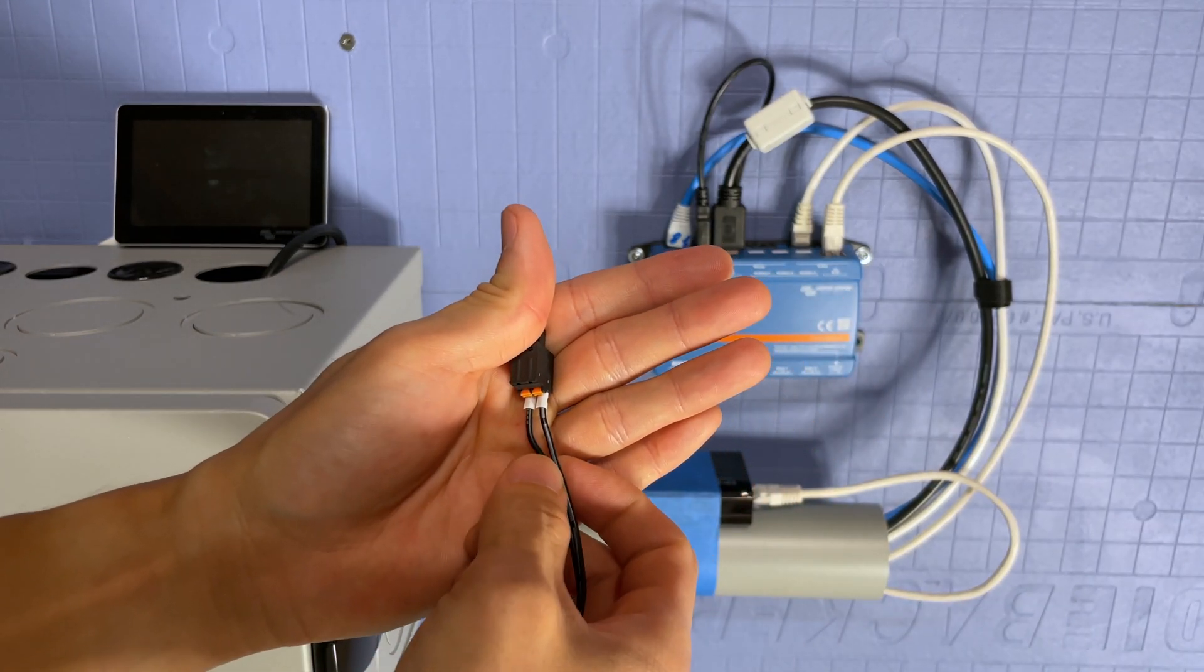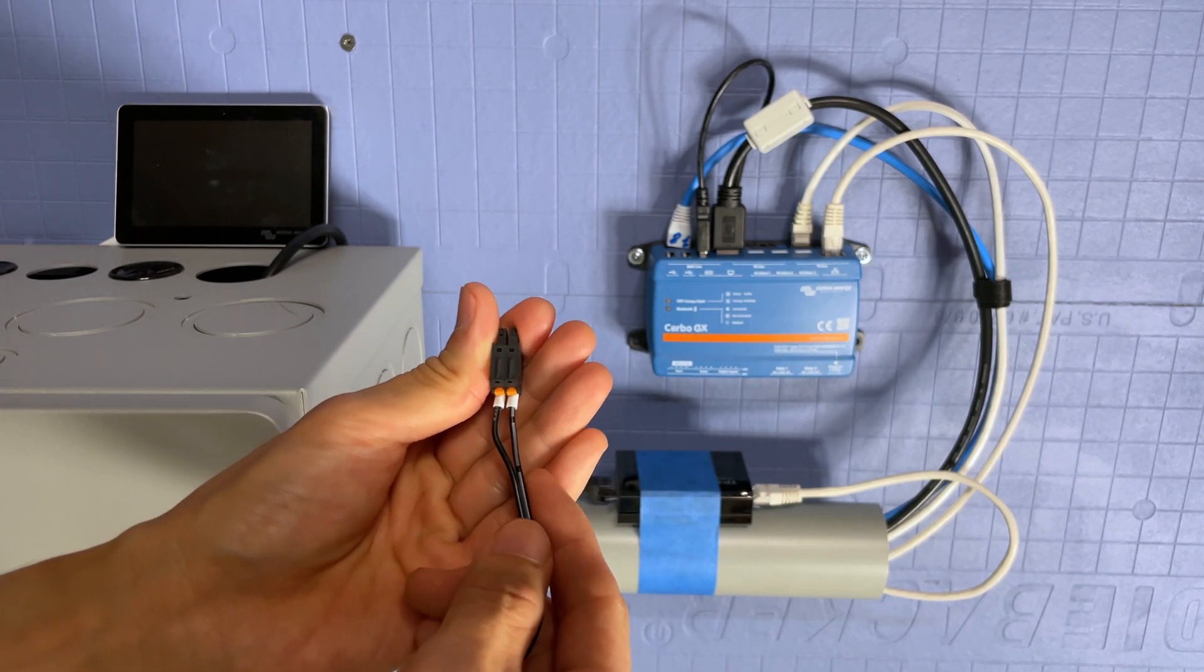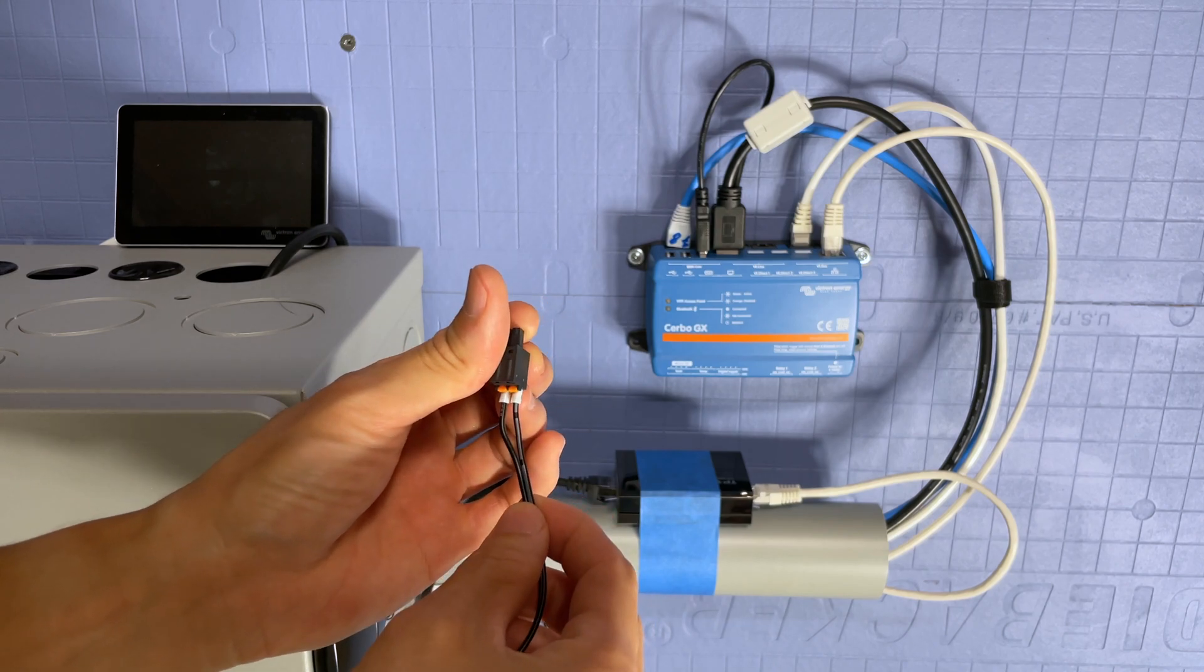And then the stripe part is the one that goes on the right side. So I believe the stripe part is the positive connector, a positive wire, there we go. So that's how it's connected like so.